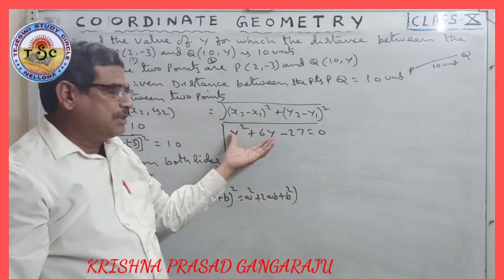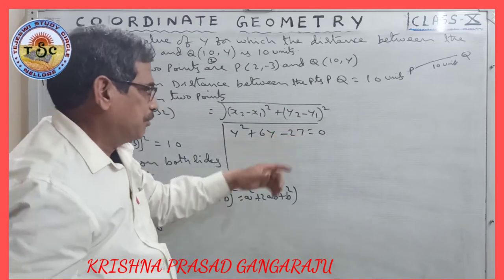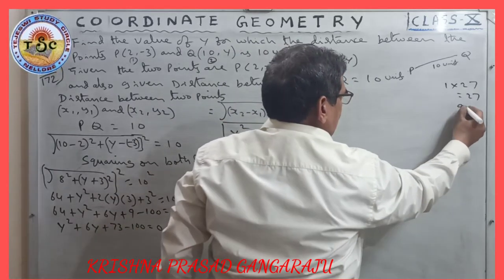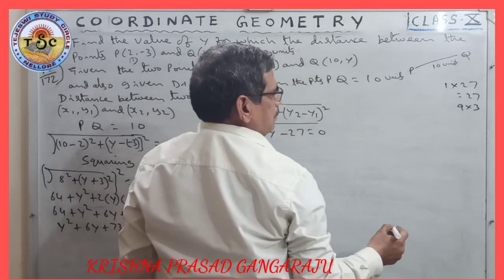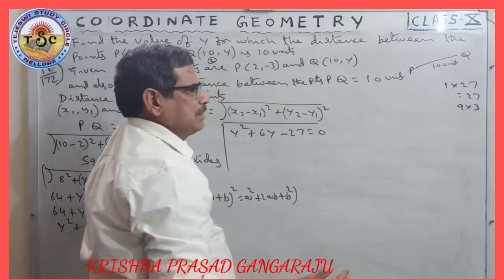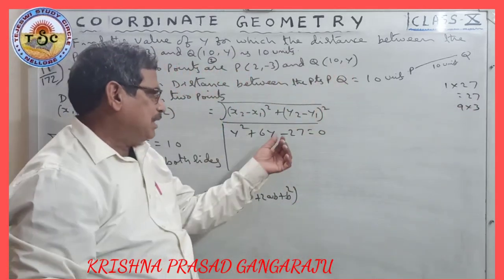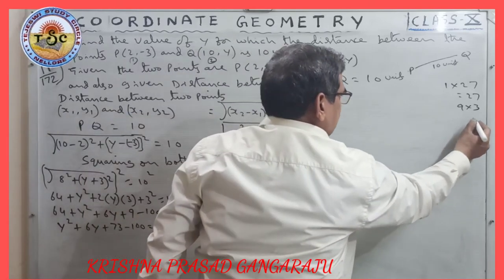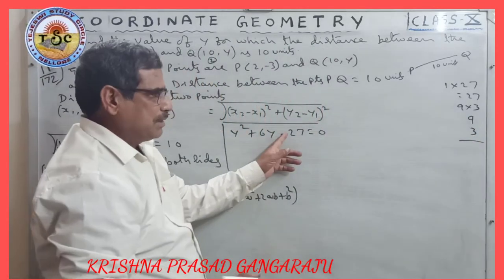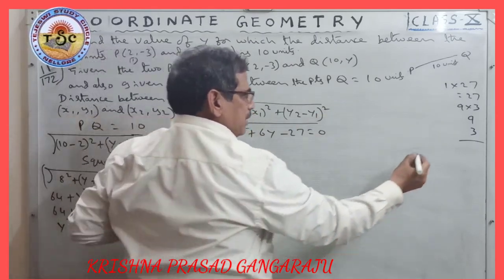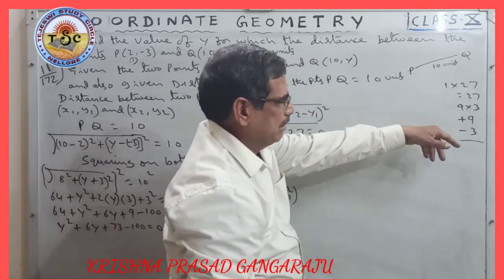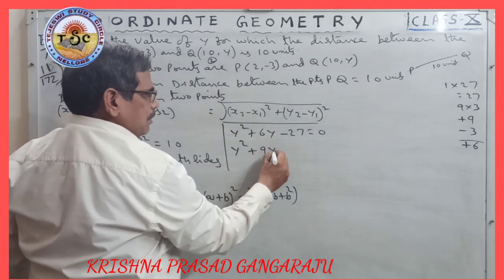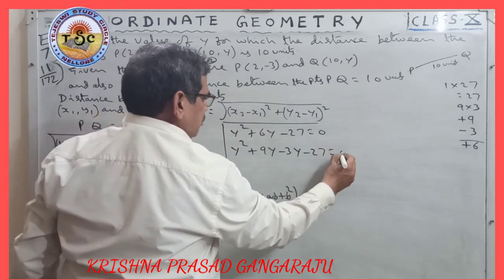Now we have to factor the quadratic equation y² + 6y − 27 = 0. We need two numbers whose product is −27 and whose sum is 6. The factors are 9 and −3, since 9 × (−3) = −27 and 9 + (−3) = 6.